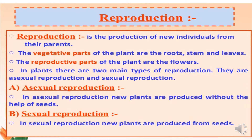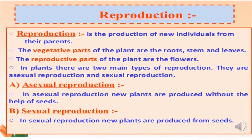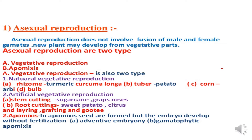Sexual reproduction involves two parents or two different plants, and asexual reproduction includes new plants produced without any help of seeds. Asexual reproduction does not involve fusion of male and female gametes. New plants may be developed from the vegetative parts. Vegetative reproduction is basically of two types: natural vegetative reproduction and artificial vegetative reproduction.